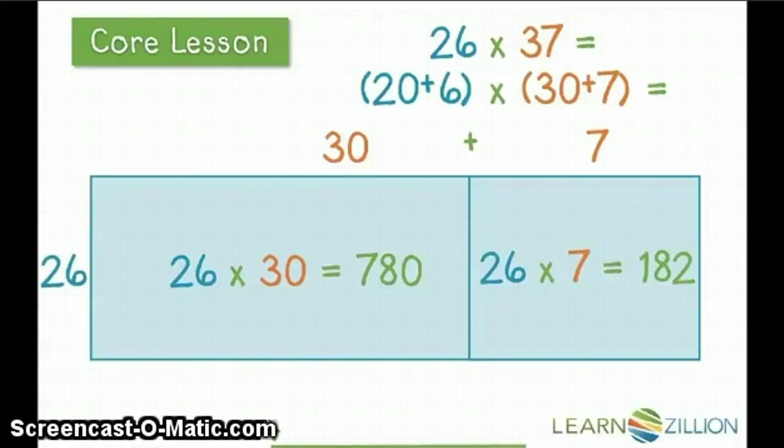Notice that now our area model looks very similar to what a double-digit by single-digit model would look like. And that's because what we just did was break apart 26 to make the multiplying easier, and now we've put it back together. So all that's left to do now is put back together our 30 and our 7.